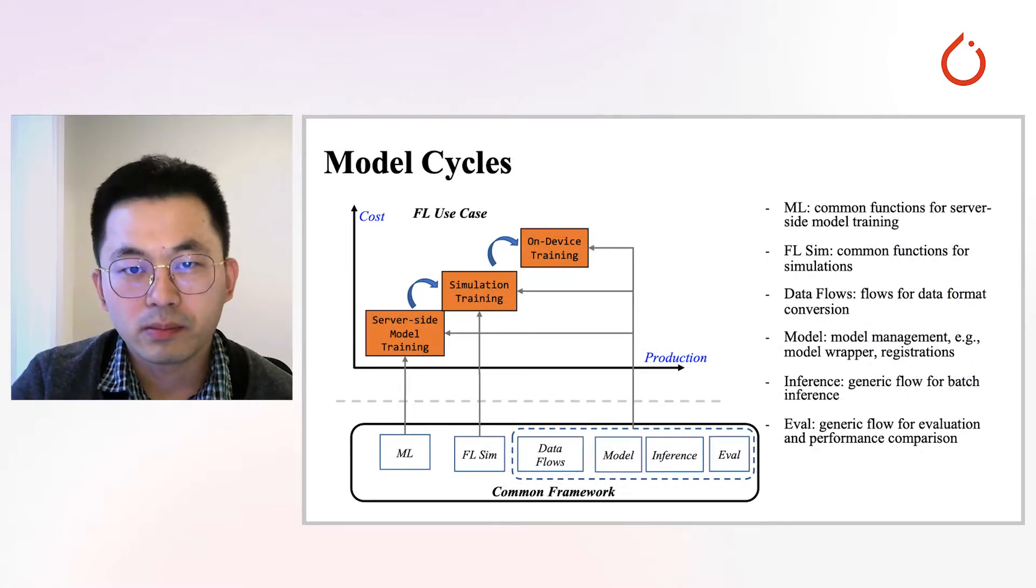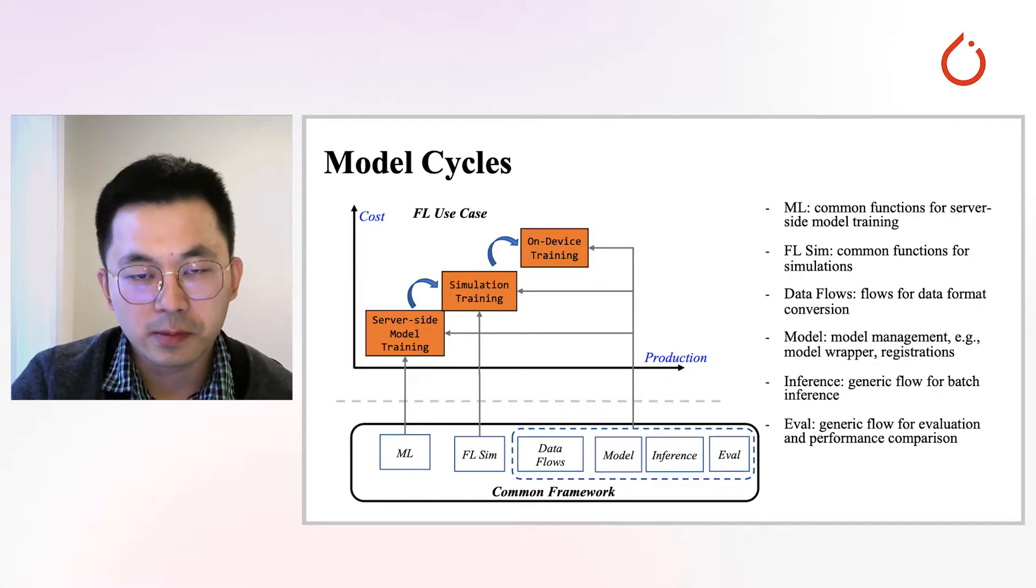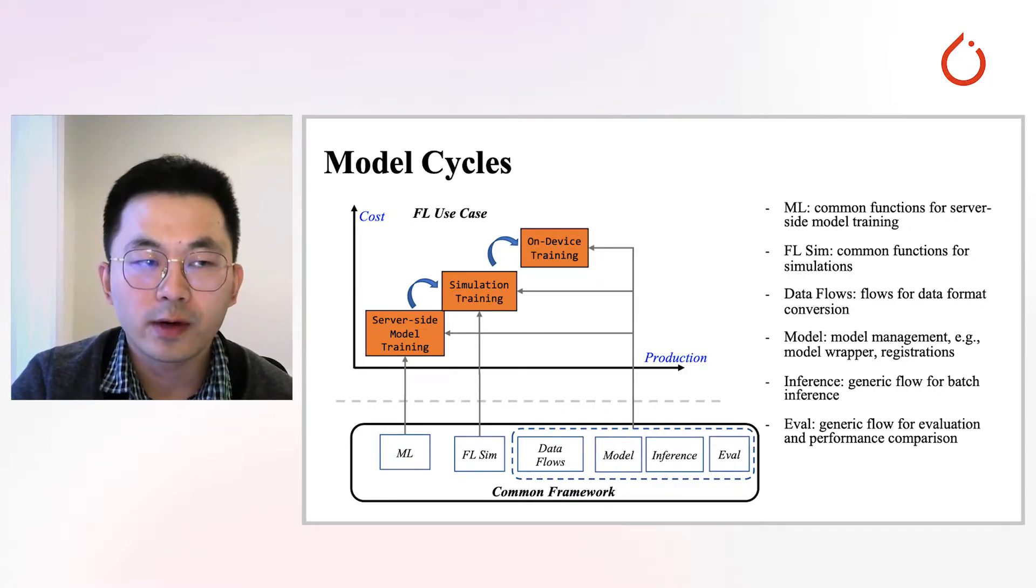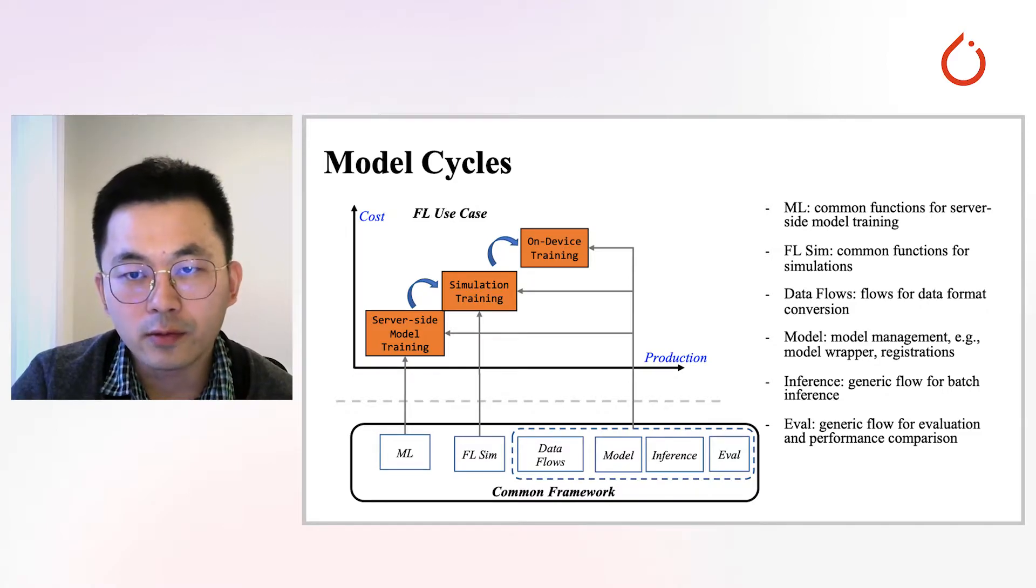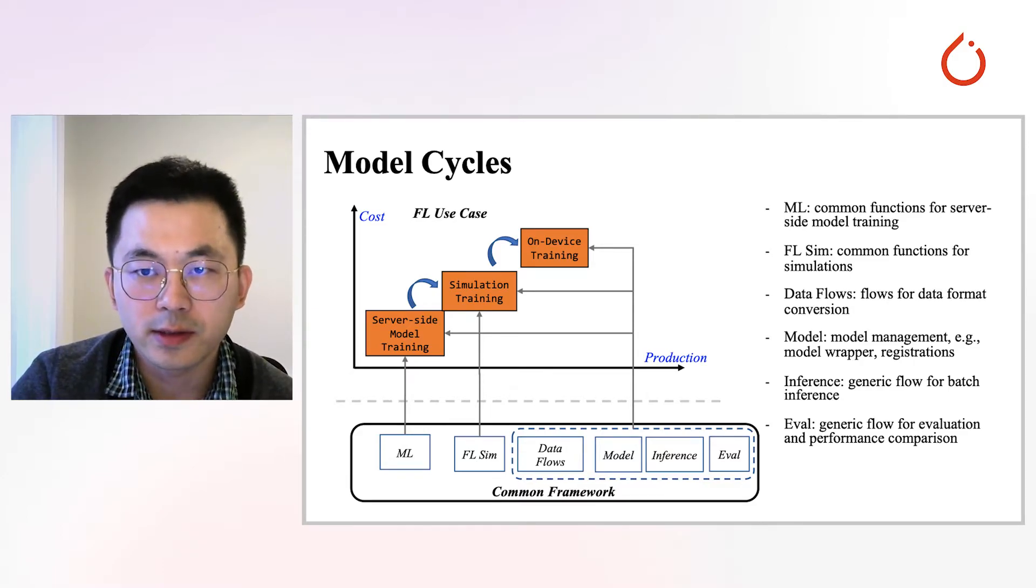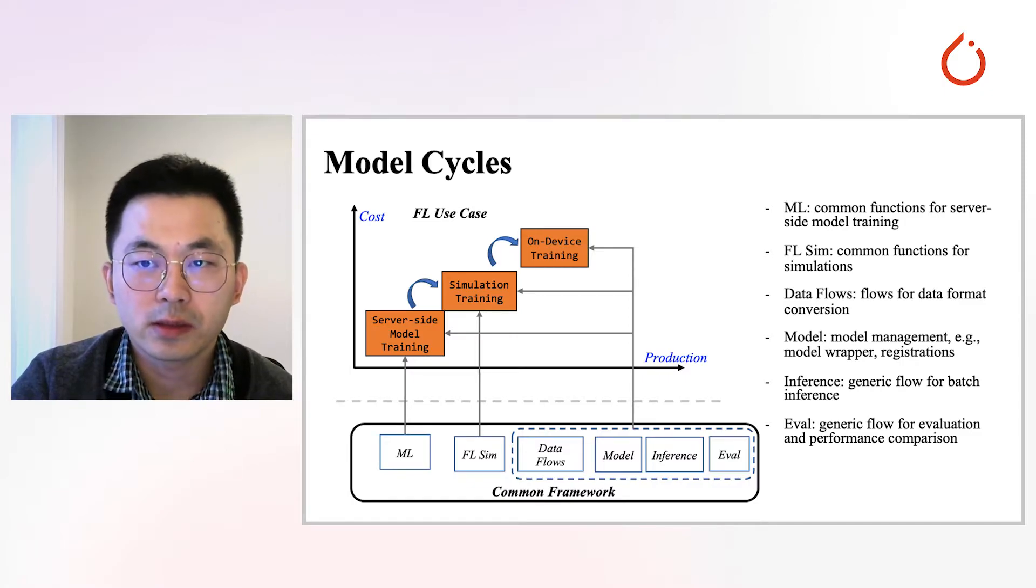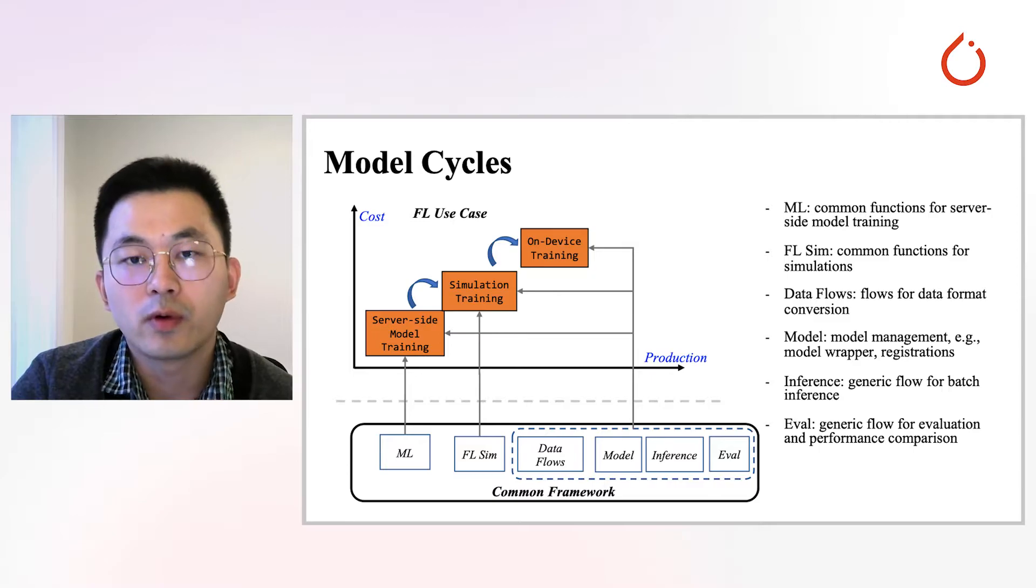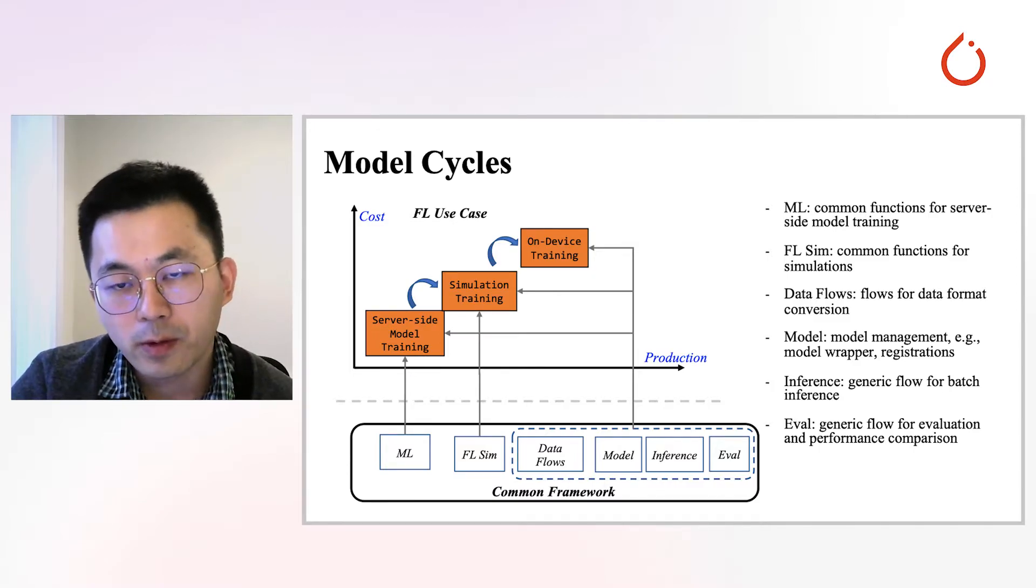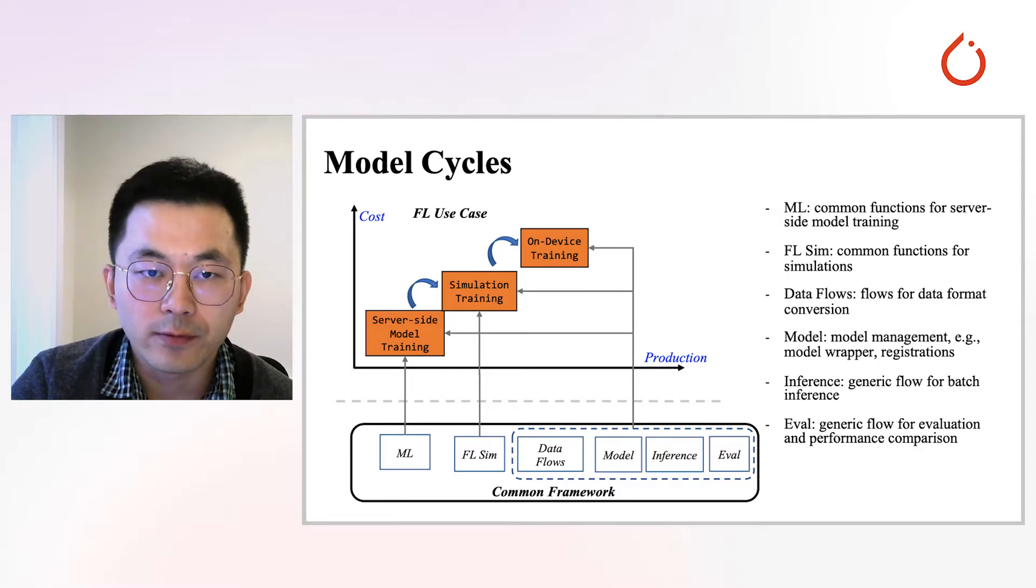Some people may ask why we need three steps. We apply the three steps because the cost of federated learning is high if we do that directly on users' devices. Users need to get involved, need to have computation costs on users' devices. We want to reduce the model tuning cycle with model preparation on server before we actually go to the devices for actual training for FL.